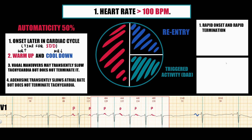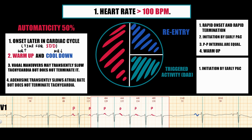Atrial tachycardia caused by re-entry has a paroxysmal nature — rapid onset, rapid termination — and is usually initiated by an early premature atrial contraction. PP intervals are equal to each other, and some kinds of re-entry tachycardia also have a warm-up period. Atrial tachycardia caused by triggered activity is characterized by initiation by an early premature atrial contraction.